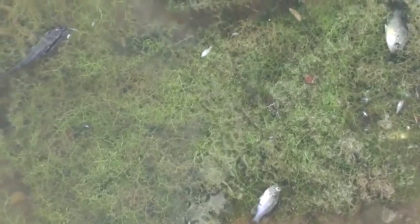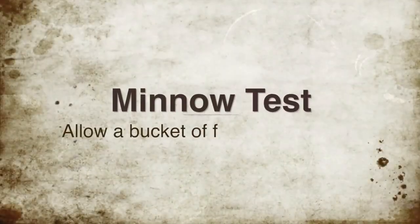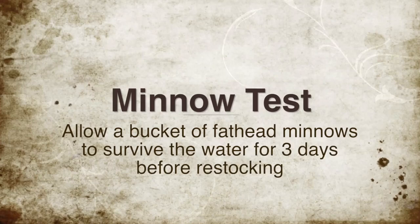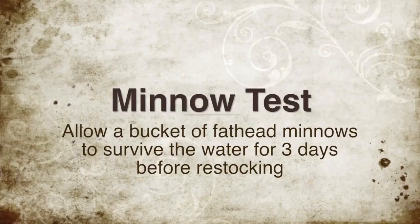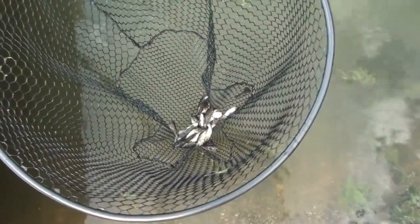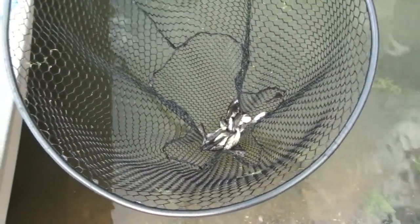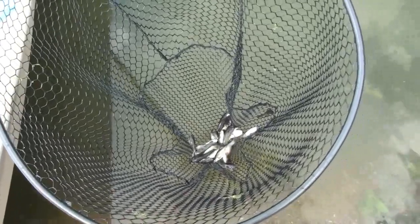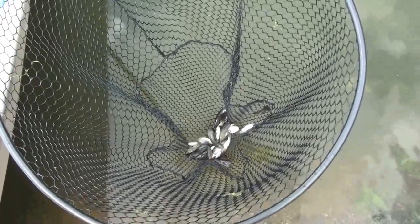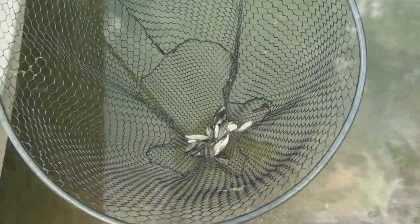On average, rotenone will detoxify in one to four weeks after application, but it is best to check the water beforehand with a minnow test. Place a minnow bucket in the treated water and place fathead minnows in the bucket. If the minnow survives three days, then the pond is ready to be restocked. Rotenone is a restricted-use pesticide that can only be applied by a certified private applicator on his or her own property or by a licensed commercial pesticide applicator.